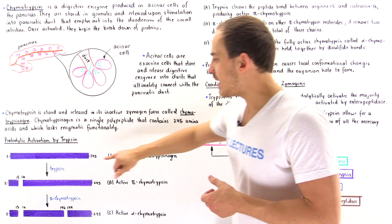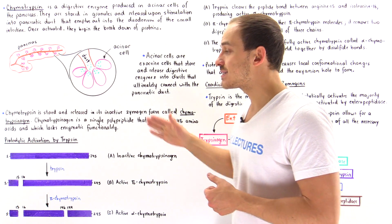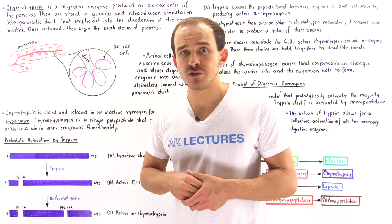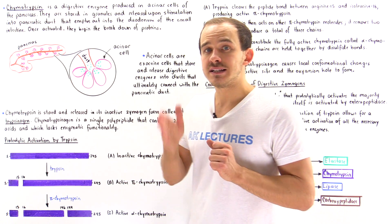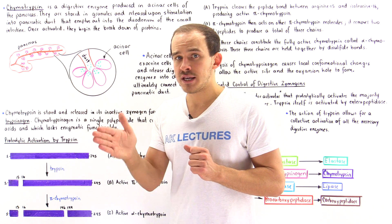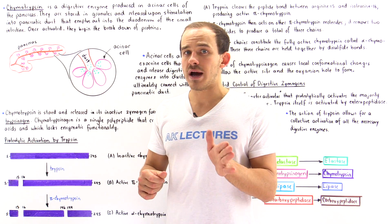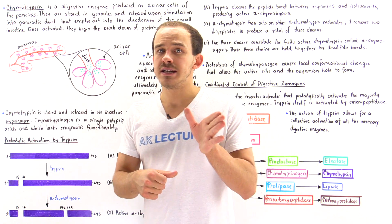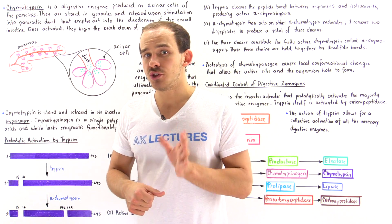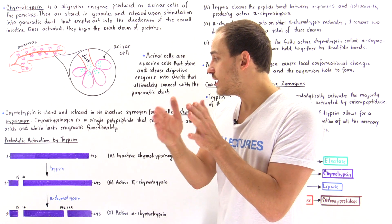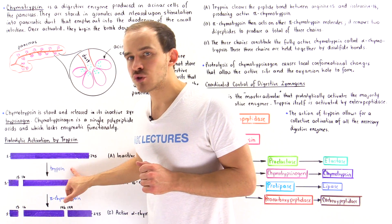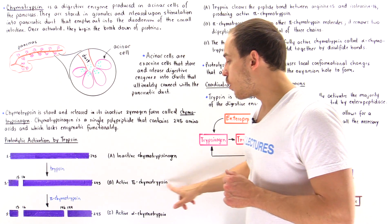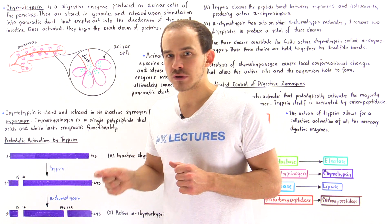Trypsin cleaves the peptide bond between the 15th and 16th amino acids. The 15th amino acid is arginine and the 16th is isoleucine. Cleavage of this Arg15–Ile16 bond by trypsin activates the zymogen to form what we call pi-chymotrypsin.